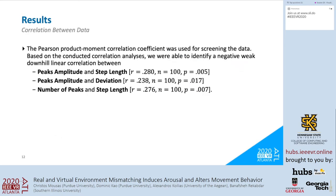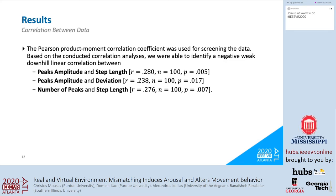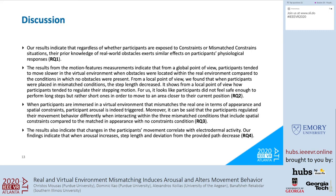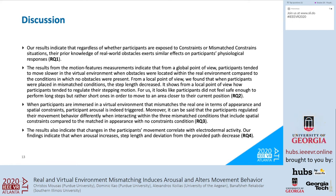We also conducted correlation analysis to investigate possible correlations between electrodermal activity and movement behavior, using the Pearson product-moment correlation coefficient. Based on the analysis, we identified negative weak linear correlations between peaks amplitude and step length, peaks amplitude and deviation, and number of peaks and step length. The electrodermal activity results showed alterations in participants' arousal in the groups that experienced mismatched appearance with constraints and mismatched appearance and mismatched constraints conditions, indicating that the presence of constraints — or mismatched constraints — similarly affected participants' physiological responses.